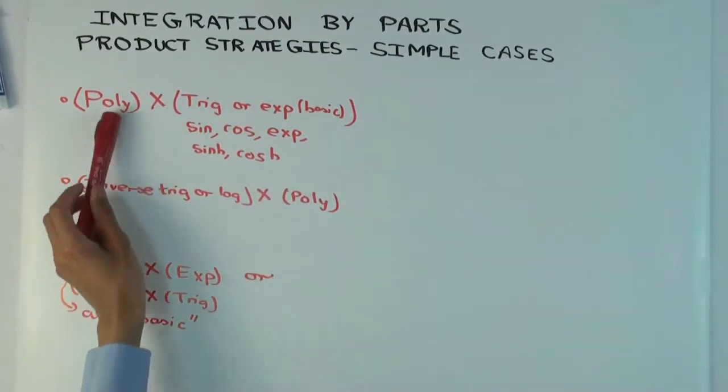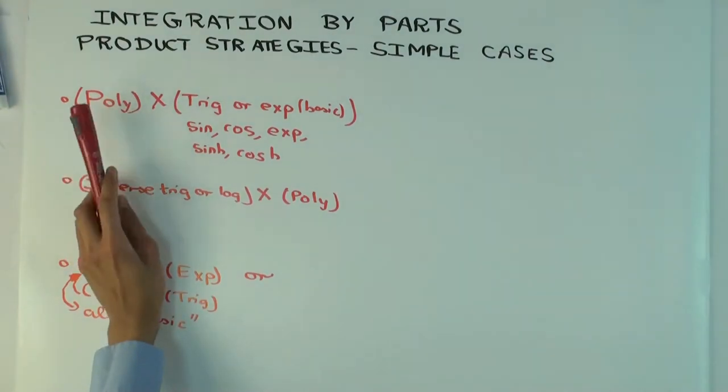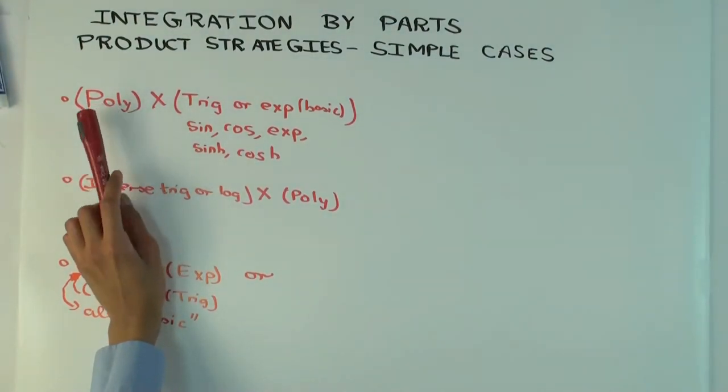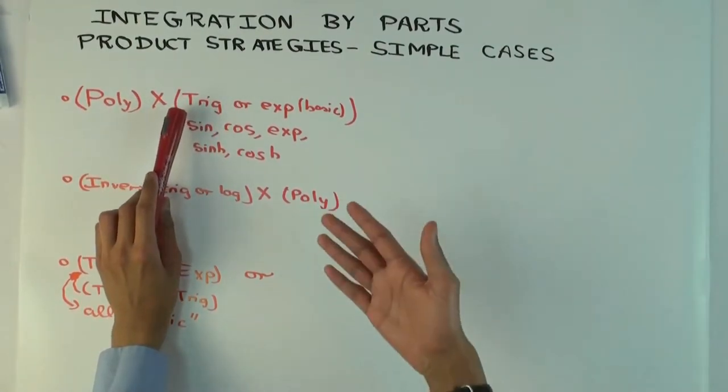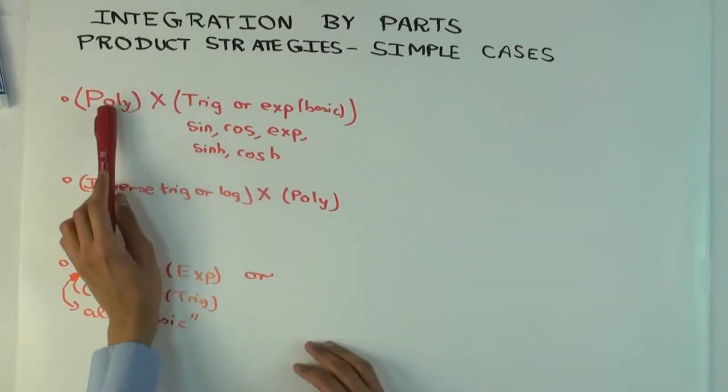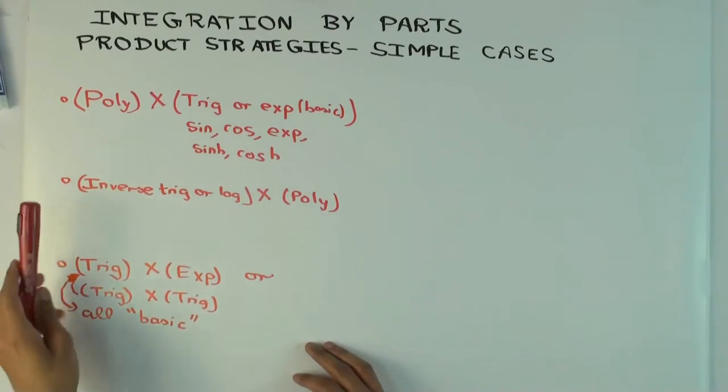In this video, I'm going to do some simple cases of how integration by parts is used for products. Basically, I'm just going to describe the strategy—figure out what to differentiate, what to integrate, how many times to do it, and so on—in three very simple cases. These are not all the cases, these are just three of the most common simple cases.